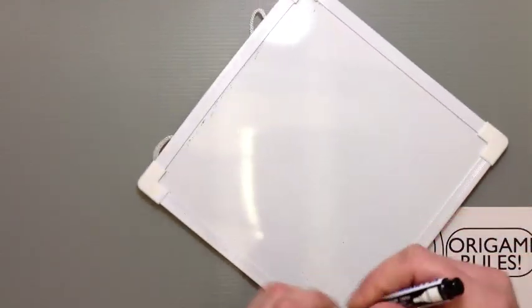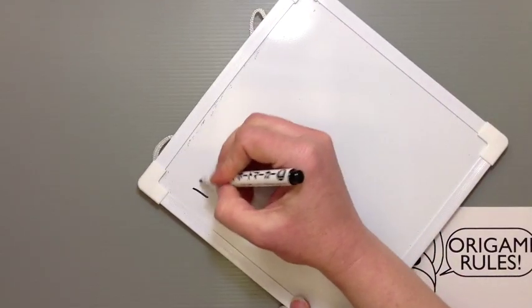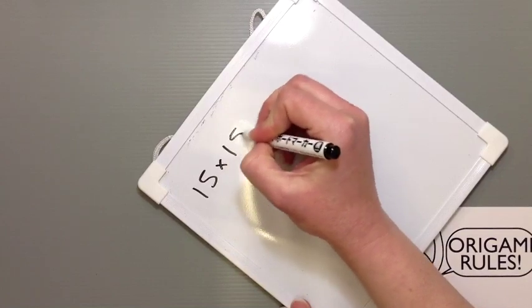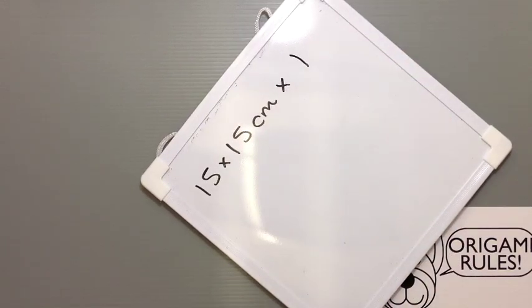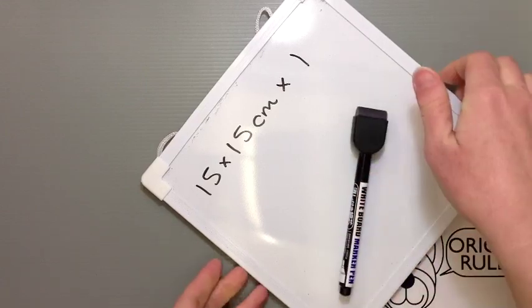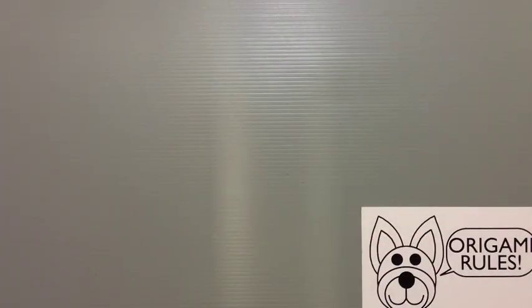For this particular origami, you just need one piece of square paper. I'm going to be using standard paper, which is 15 by 15 centimeters. I'll let you guys know the dimensions when we're finished so that you can know if you're putting stuff together for a project or something. You'll know the size to use.